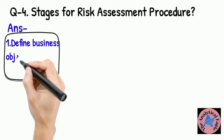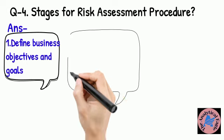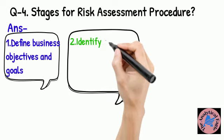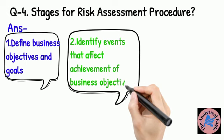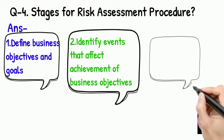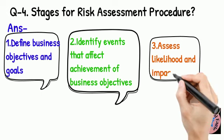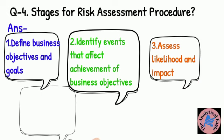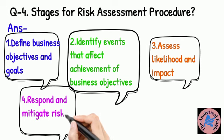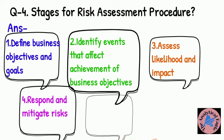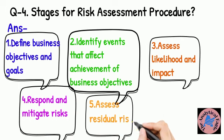Question 4: Stages of the Risk Assessment Procedure. First, define objectives and goals. Second, identify events that can affect the achievement of those objectives. Third, respond to and mitigate the risk. Finally, assess the residual risk — the risk remaining after mitigation.